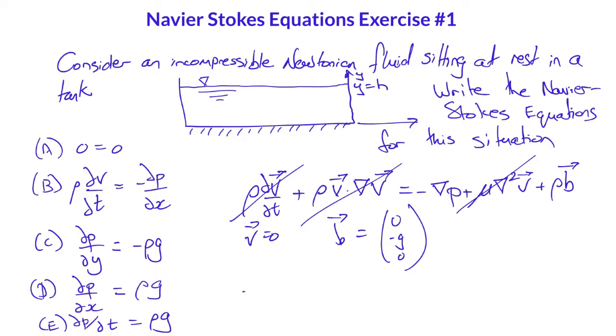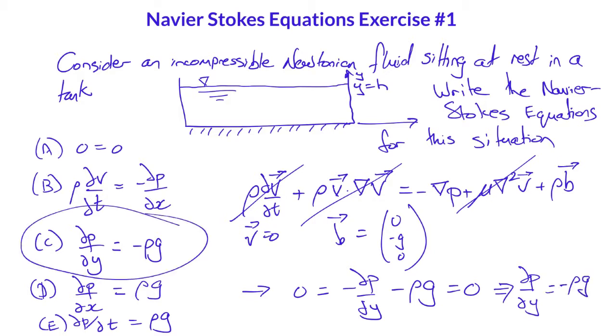and the body force is just due to gravity in the y direction, so it's just 0 minus g 0, which leaves us with minus del p del y minus rho g equals 0, or del p del y equals minus rho g.